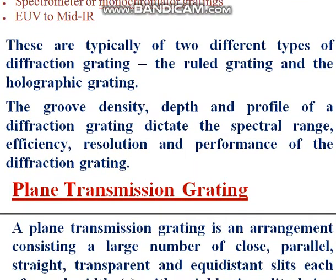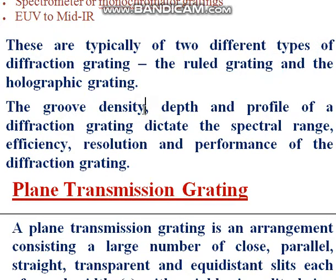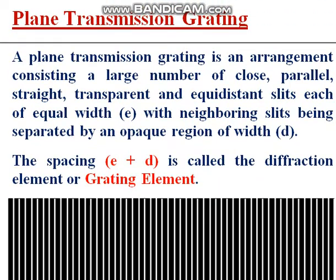There are typically two different types: the ruled grating and the holographic grating. Ruled gratings are obtained by designing a number of rulings on a plane or curved surface. The groove density, depth, and profile of the diffraction grating decide the spectral range, efficiency, resolution, and performance of the diffraction grating.